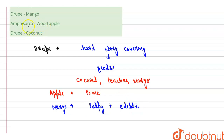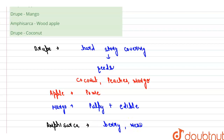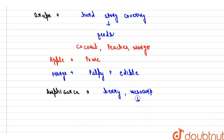In the third option we have been given amphisarca with wood apple. Amphisarca is a berry with a hard outer covering, but its mesocarp is pulpy rather than fibrous. So this option is again incorrect.